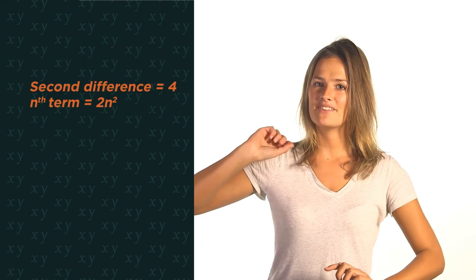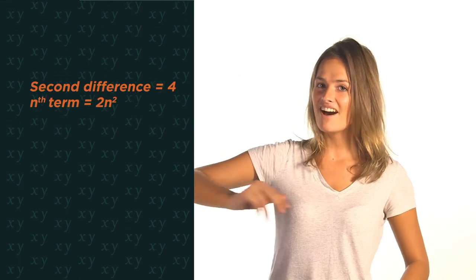So there we have finding the nth term for quadratic sequences. Just remember to look for that second difference and then half it.